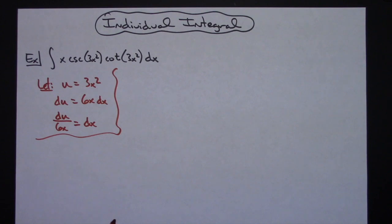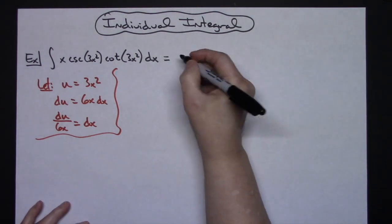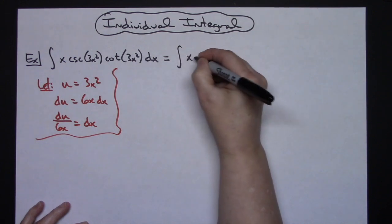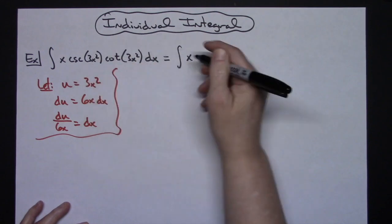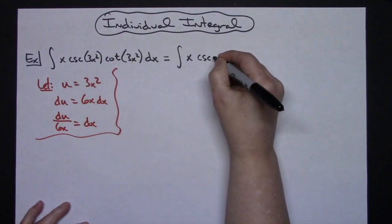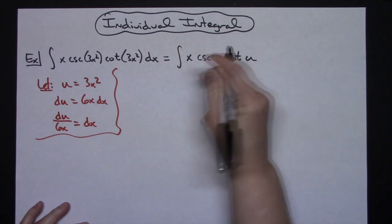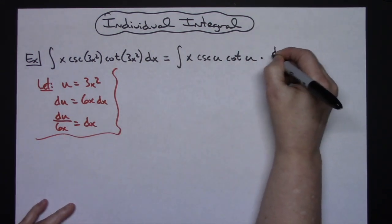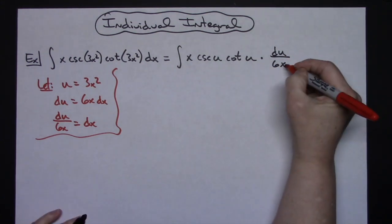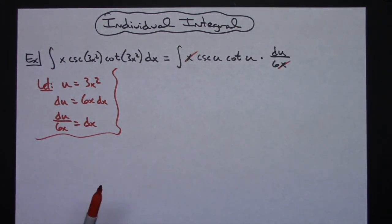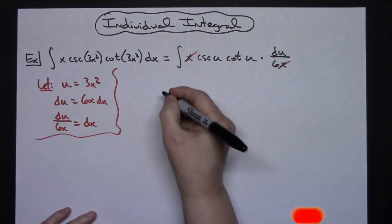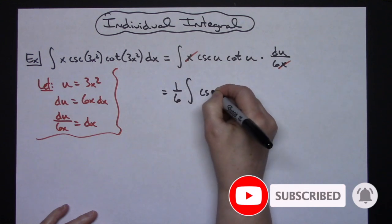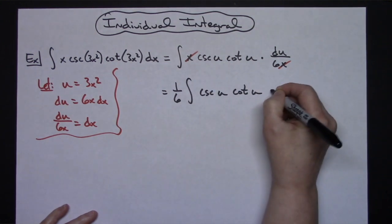Coming back up to the original integral and making substitutions, I'll still have the x, then substitute u in for cosecant u cotangent u. Replacing dx with du over 6x is going to allow me to cross out the x's. I'll also be able to pull the 1/6 out in front, giving me 1/6 times the integral of cosecant u cotangent u du.